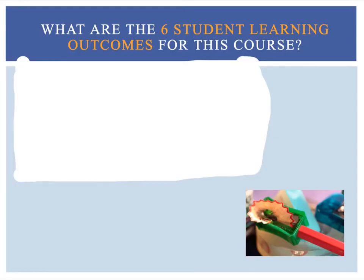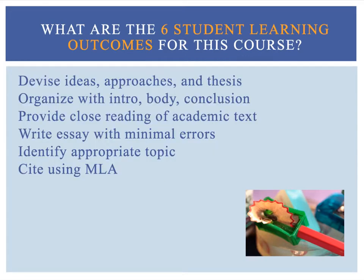What are the six student learning outcomes for this course? Pause the video to find the answer, then restart the video to see if you're correct. The six student learning outcomes are: devise ideas, approaches, and thesis; organize with intro, body, and conclusion; provide close reading of academic text; write essay with minimal errors; identify appropriate topic; and cite using MLA.